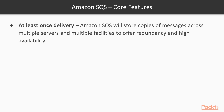A core feature is at-least-once delivery. Amazon SQS stores copies of messages across multiple servers and facilities to offer redundancy and high availability. It is possible that a server hosting a copy of a message might be unavailable when you receive or delete it, resulting in a component retrieving a message that was already processed. To avoid this adversely affecting your application, ensure that you design your solution to be idempotent.